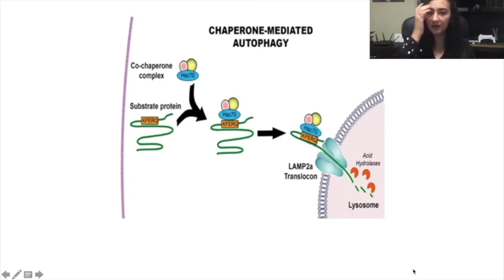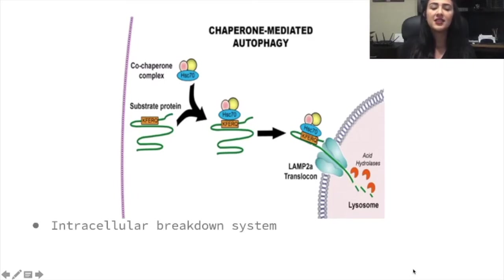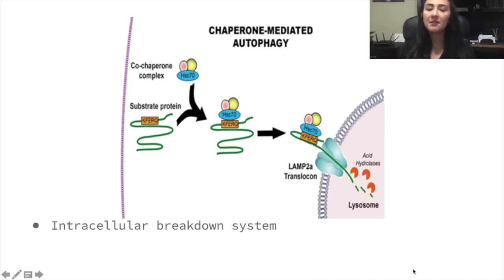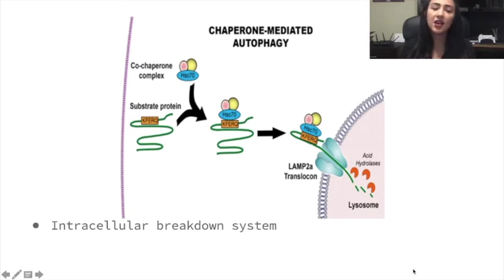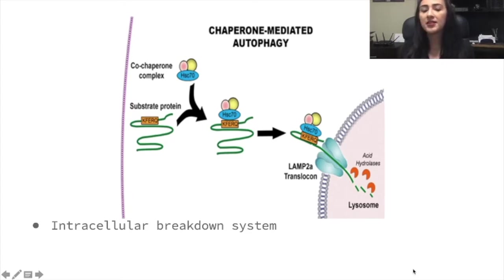So first of all, what is Chaperone-Mediated Autophagy? Well, Chaperone-Mediated Autophagy, or CMA as I will be referring to from now on, is an intracellular breakdown system, meaning that within the cell it breaks things down. In this case we're going to break down protein that is either unhealthy or redundant or of no use to the cell into amino acids, which are the building blocks of protein.